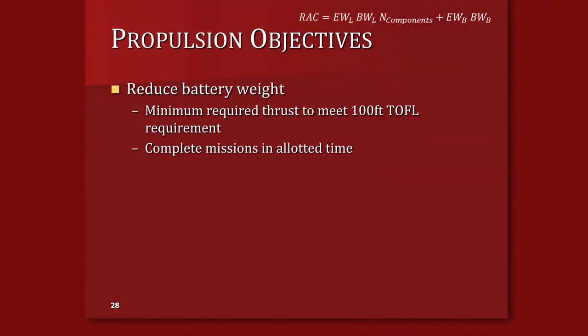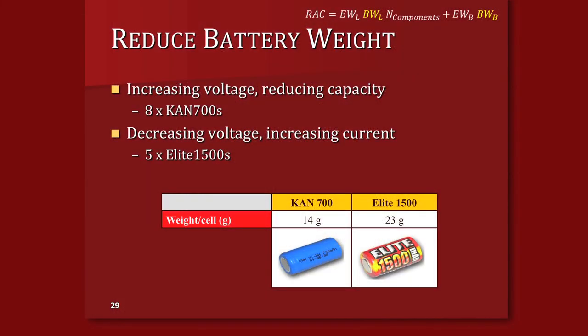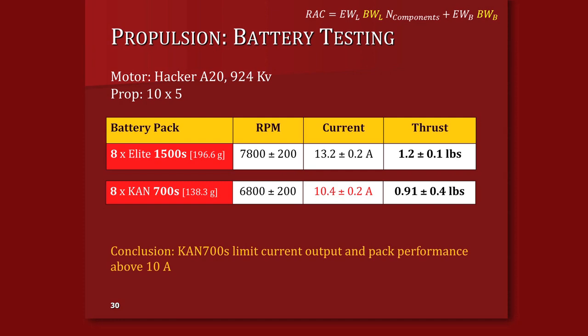For last year, since scoring was binary, the propulsion objectives were simply to complete the missions in the allotted time, generate enough thrust to meet our takeoff requirement, and reduce battery weight at all costs. To reduce battery weight, we looked at two approaches: high voltage, low current, which allows a lower capacity and more lightweight cell; or lower voltage and higher current, which uses fewer but heavier individual cells. Through battery testing in lab, we tested two different capacity cells. For the same motor, propeller, and battery pack voltage, we found that the low capacity cells were limiting current output due to their construction — the CAN 700s pretty greatly underperformed the Elite 1500s, so that was the cell we chose.